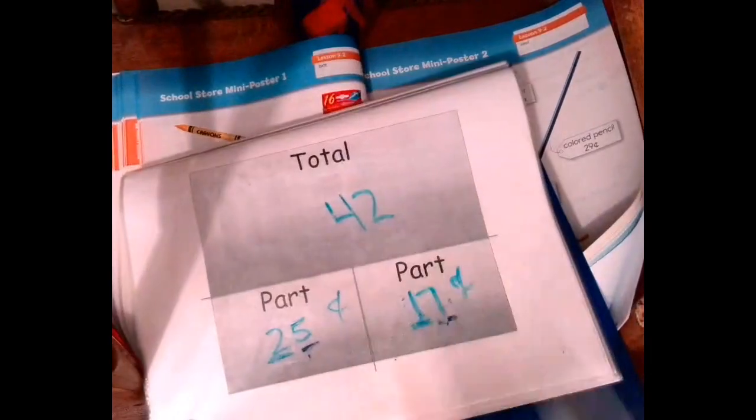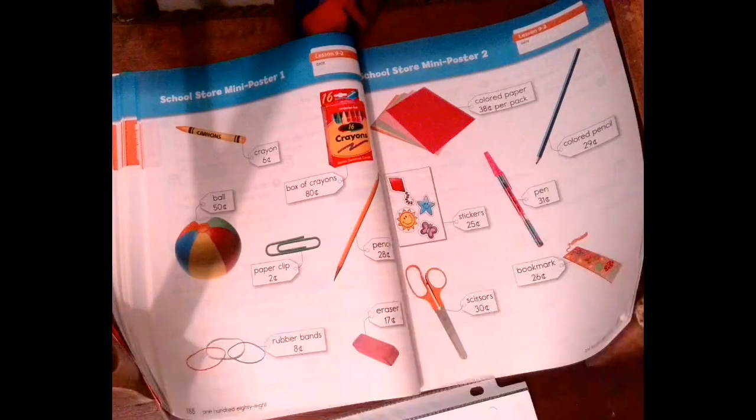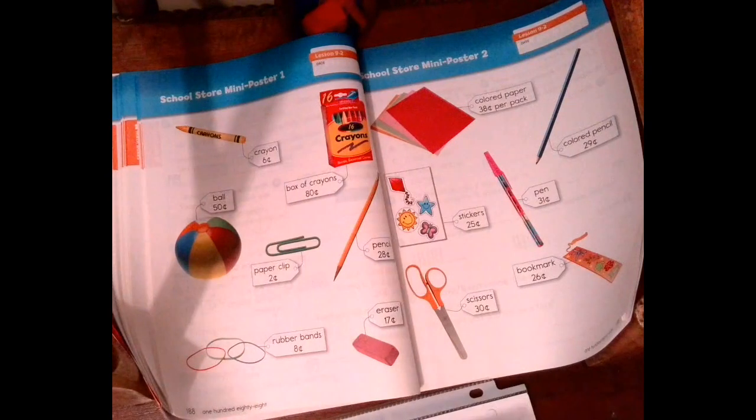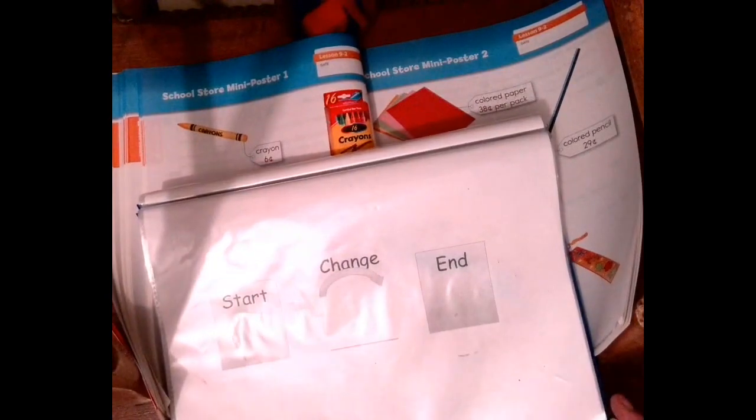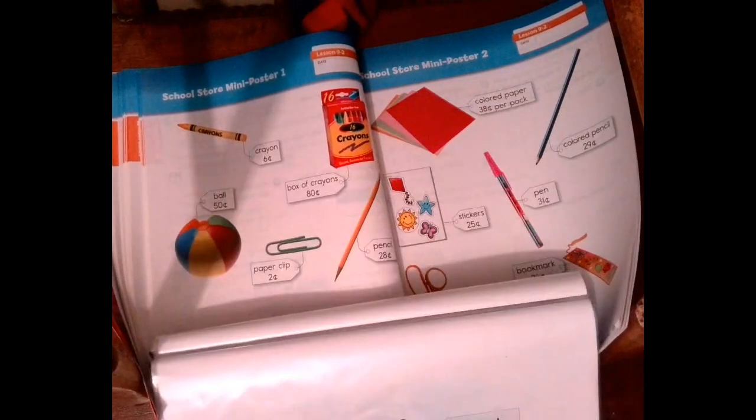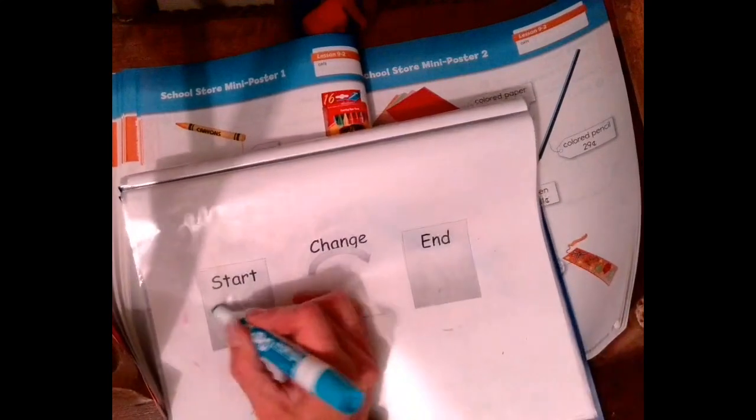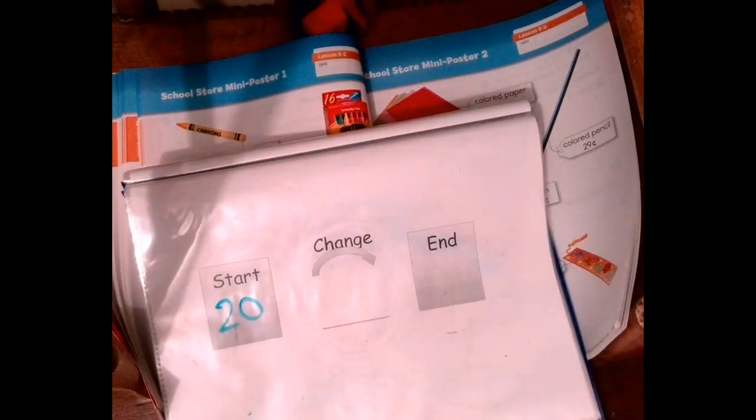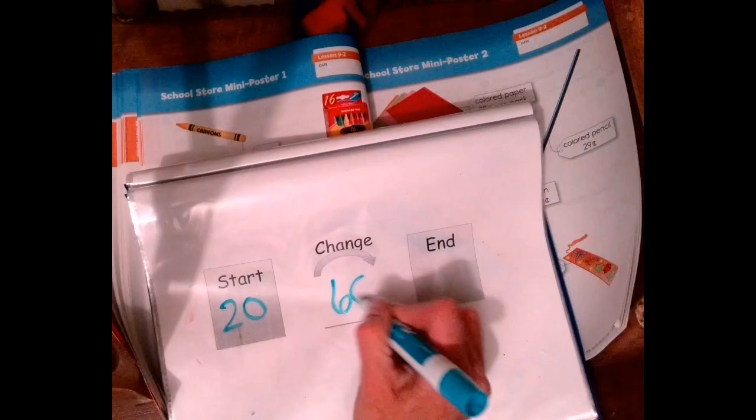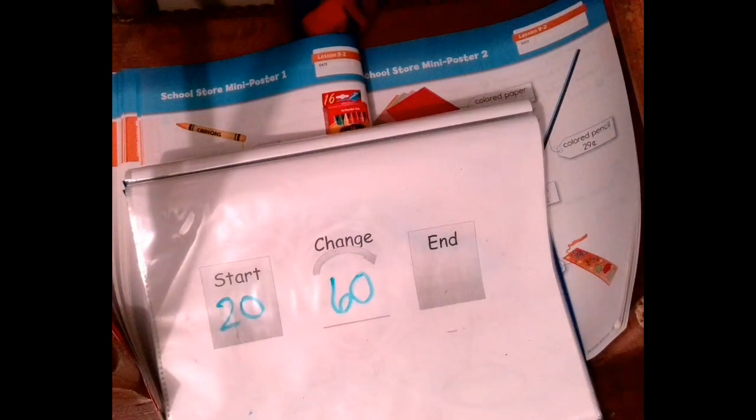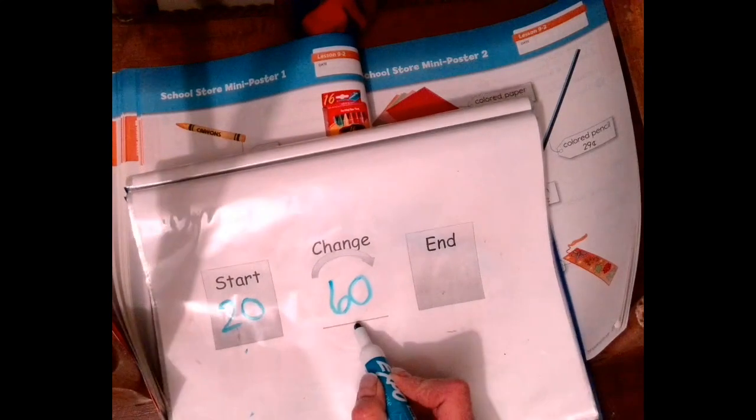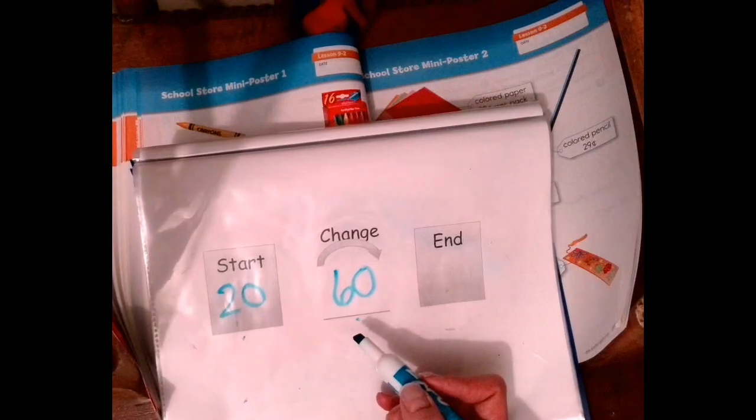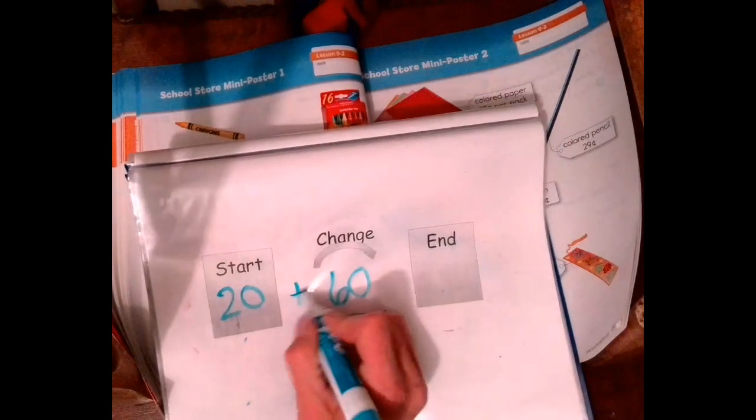Now we could use the change-to-more diagram. We're going to change our number story. So Diego has 20 cents, his mom gives him 60 more. How many cents does Diego have now? So he had 20, his mom gives him 60. Are we adding or subtracting? Yes, we're going to add, so we're going to put a plus sign there.